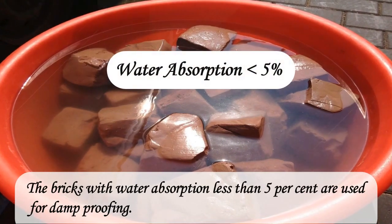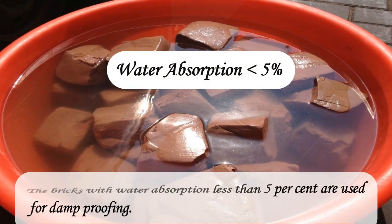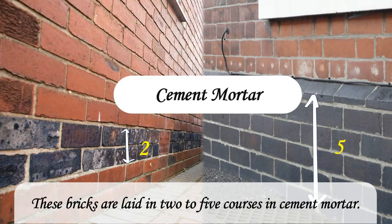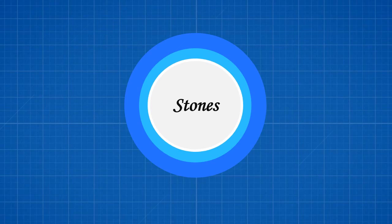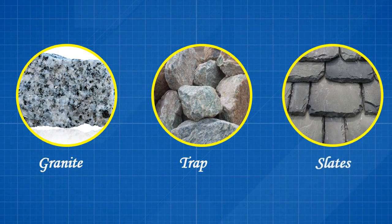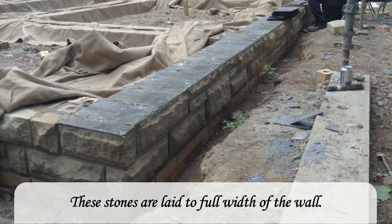Bricks with water absorption less than 5% are used for damp proofing. These bricks are laid in two to five courses in cement mortar. Stones such as granite, trap, slates, etc. are also used for damp proofing.